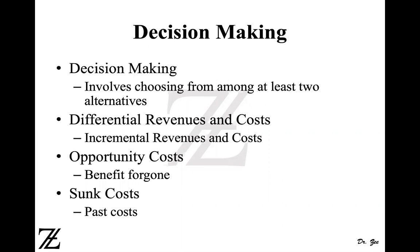If you don't have any choice and you have to do something regardless, then you're not making any decision. But if you have alternatives — you can choose alternative A or B — then you are making a decision. For example: working for employer A or B, hiring worker A or B, going to school or going to work. Whenever you have two or more choices, then you make decisions.